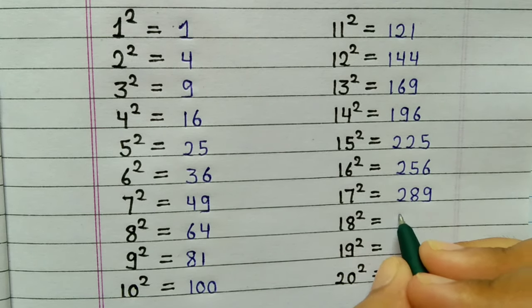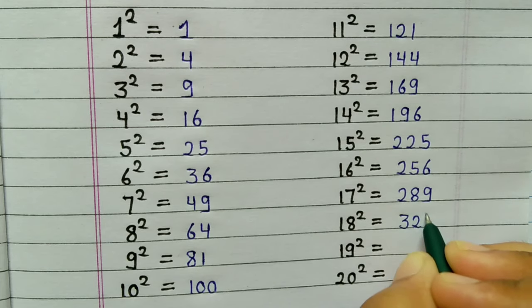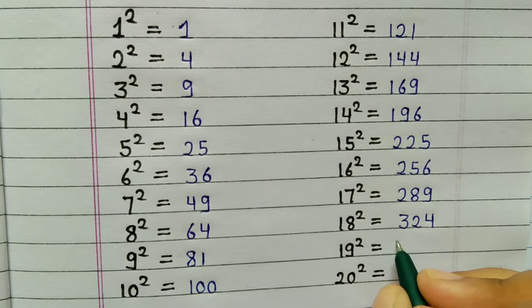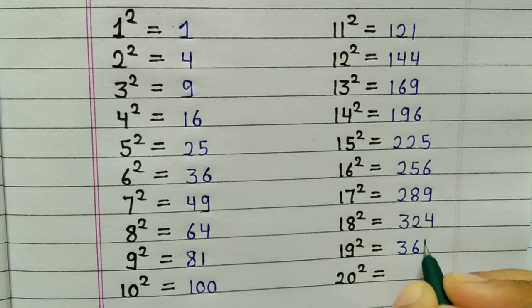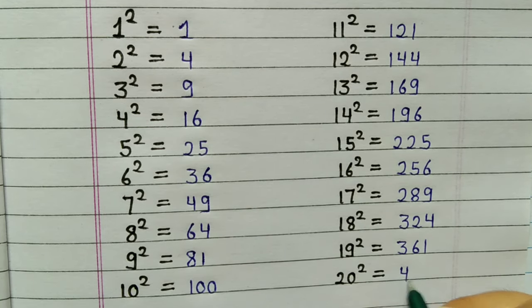18 squared is 324, 19 squared is 361, 20 squared is 400.